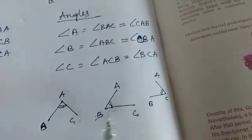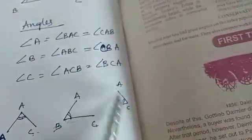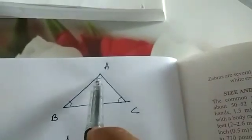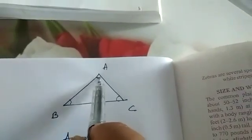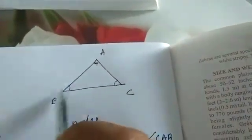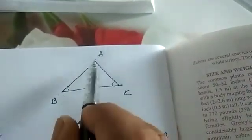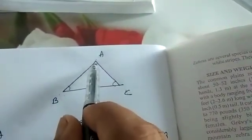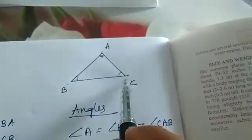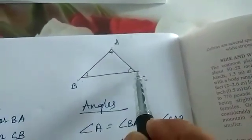For example, angle B can be written as ABC, CBA, or simply angle B. Similarly, angle C can be written as ACB or BCA. The vertex must always be in the center of the three-letter name.